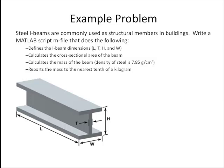What we want to do is write a MATLAB script M-file that does the following. It's going to define the I-beam dimensions L, T, H, and W. It's going to calculate the cross-sectional area of the beam, calculate the mass of the beam, with the density of steel being 7.85 grams per cubic centimeter, and then it's going to report the mass to the nearest tenth of a kilogram.